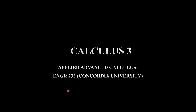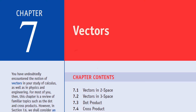Hi everyone, in this course I'm going to be teaching you guys Cal 3, which is also known as Applied Advanced Calculus ENG 233 at Concordia University. I'm going to start with chapter 7, which is basically a review on vectors — like how to do addition or subtraction of vectors, cross product, and dot product.